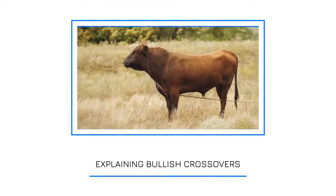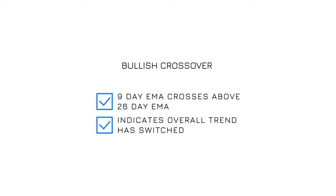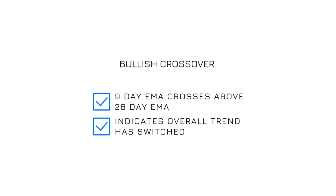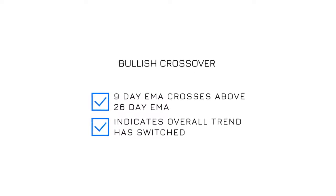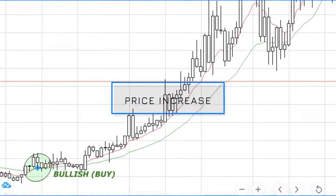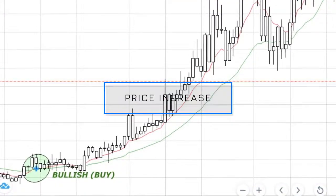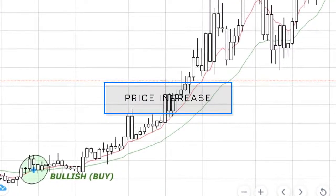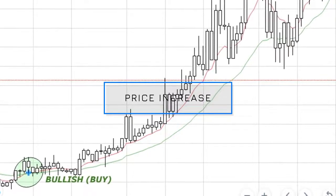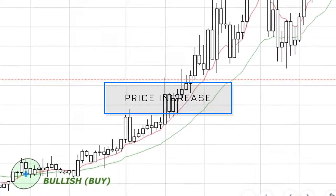Bullish crossovers explained. A bullish crossover occurs when the 9 day red EMA crosses above the 26 day green EMA. This indicates that the overall trend is switching from bearish to bullish, suggesting that the cryptocurrency will increase in price, with the EMA Cross Indicator showing the crossover with a small X. There is a clear bullish indication seen in the green circle demonstrated on the screen.